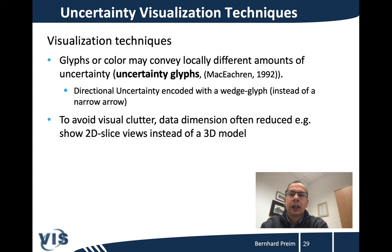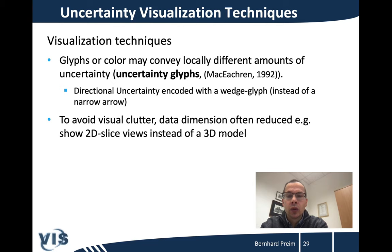Which other visualization techniques are available? Glyphs can be used, and are even useful for presenting multidimensional data. If there are several sources of uncertainty simultaneously, a glyph may convey directional uncertainty — because a glyph can be designed to represent a clear direction, for example a vector glyph or an ellipsoidal glyph. Color may also be used, and is primarily suited for value and attribute uncertainty.